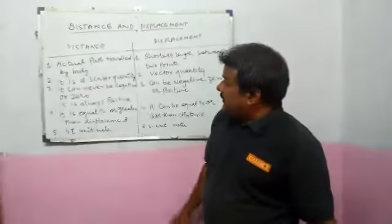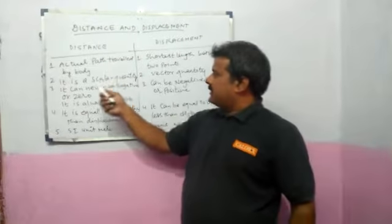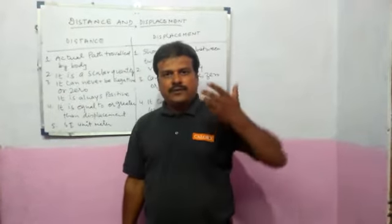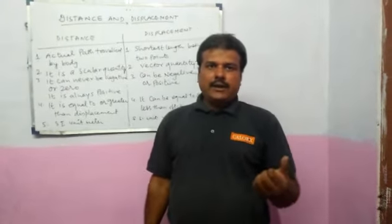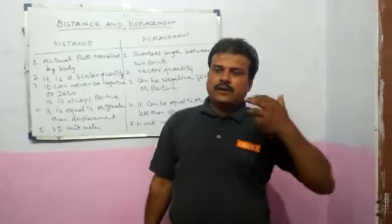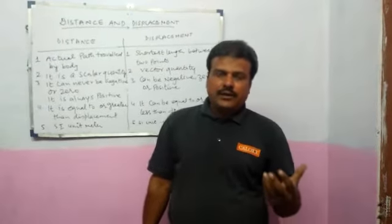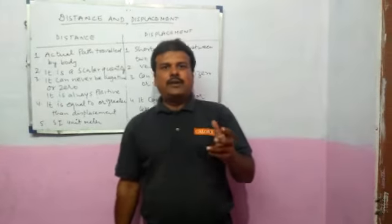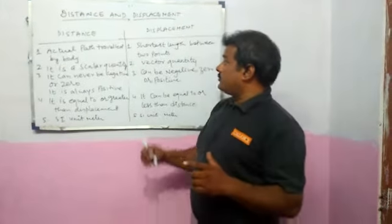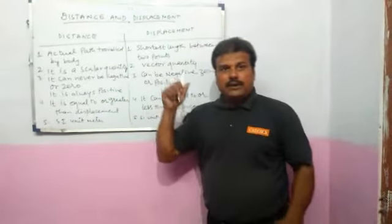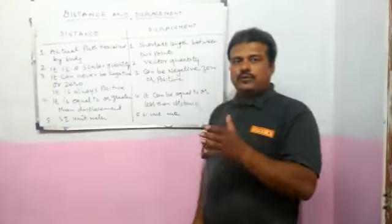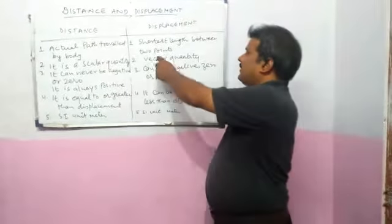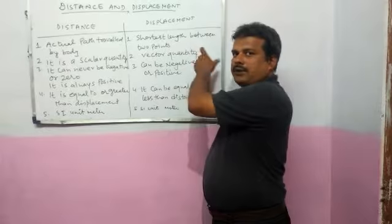The distance is a scalar quantity. We have to know about scalar quantity — a scalar quantity is a quantity which has only magnitude and does not have any direction. But in case of vector quantity, a vector quantity has magnitude as well as direction. So, displacement is a vector quantity.